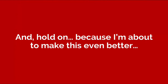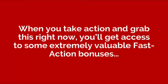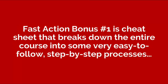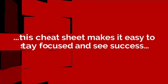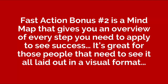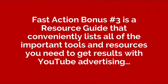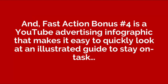Hold on, because I'm about to make this even better. When you take action and grab this right now, you'll get access to some extremely valuable fast action bonuses. Fast action bonus number one is a cheat sheet that breaks down the entire course into easy-to-follow step-by-step processes. Fast action bonus number two is a mind map that gives you an overview of every step you need to apply to see success — great for those who need to see it all laid out visually. Fast action bonus number three is a resource guide that lists all the important tools and resources you need. And fast action bonus number four is a YouTube advertising infographic that makes it easy to quickly reference an illustrated guide to stay on task.